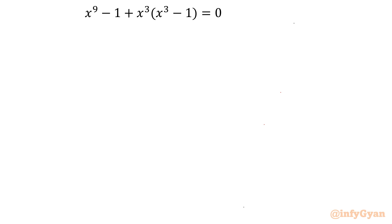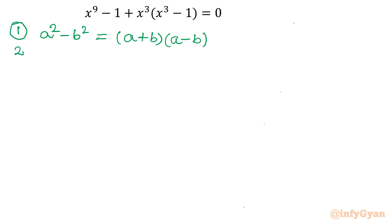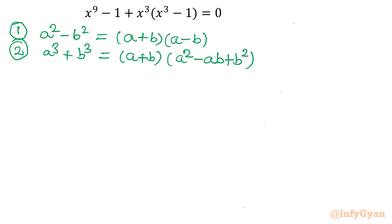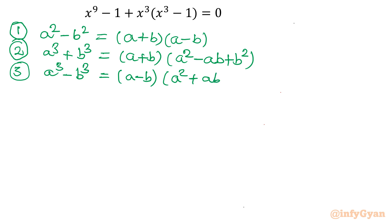I will begin by writing three algebraic identities. Identity number 1: the difference of squares — a squared minus b squared equals (a plus b)(a minus b). Identity number 2: a cubed plus b cubed equals (a plus b)(a squared minus ab plus b squared). Identity number 3: a cubed minus b cubed equals (a minus b)(a squared plus ab plus b squared).